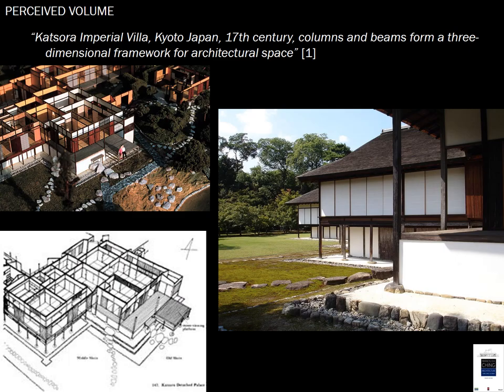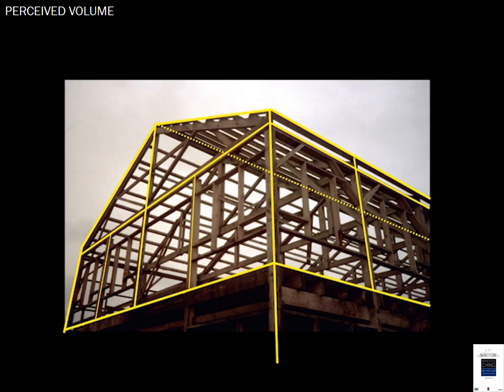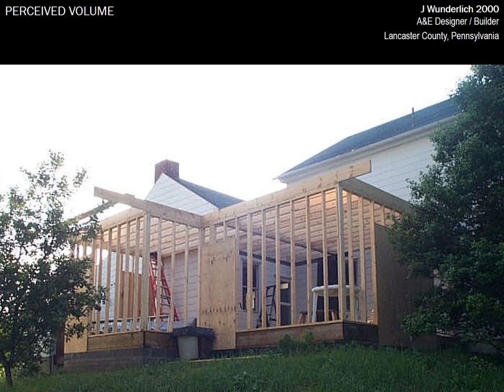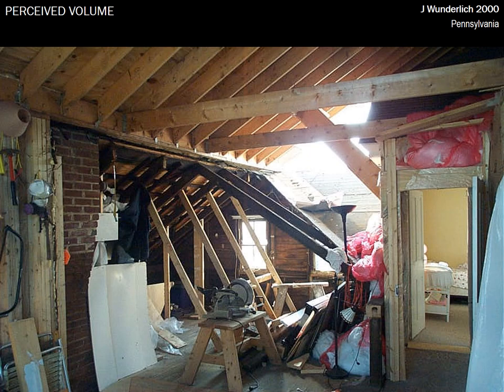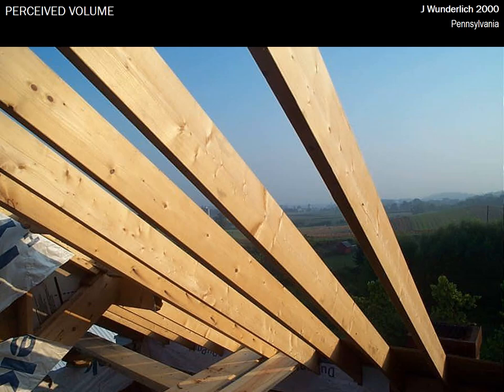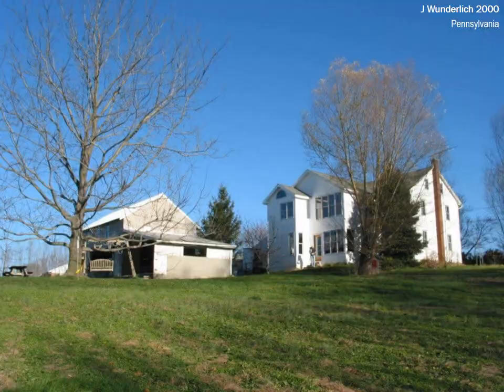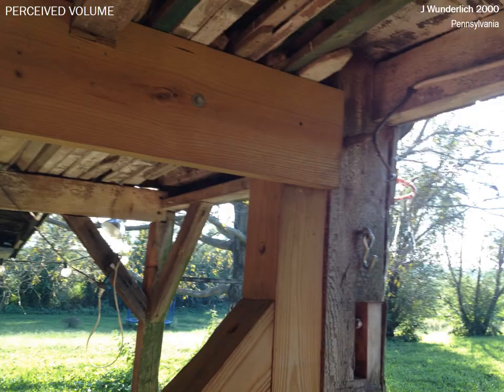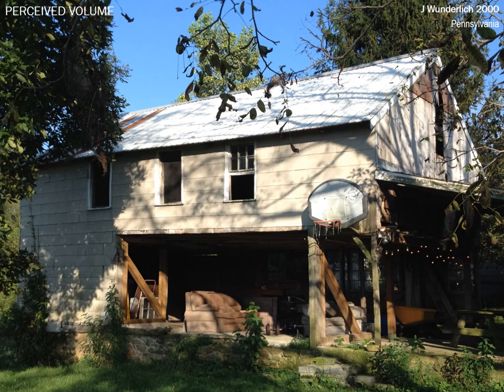The perceived volume is created by virtue of columns and beams forming a perceived skeleton — this is the skeleton beneath the skin. I have students make barn models so they can perceive the skeleton and the volume it defines. A recent project of mine uses all the framing — old and new — as the bones of the building defining volume within. Some details of the barn structure I've had to beef up are discussed in other lectures.